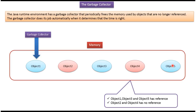In that, 3 objects have a reference and 2 objects do not have any reference. Object 1, Object 3, and Object 5 have references. Object 2 and Object 4 do not have any reference.